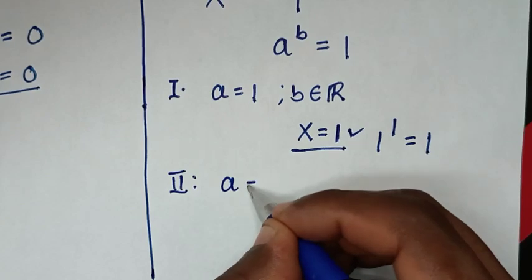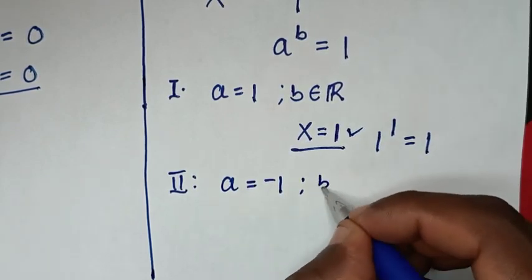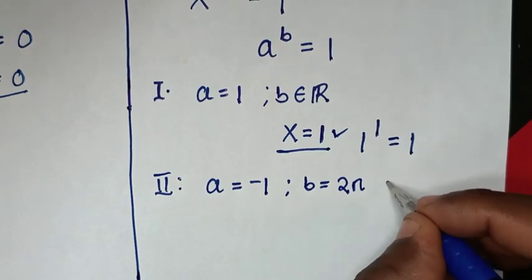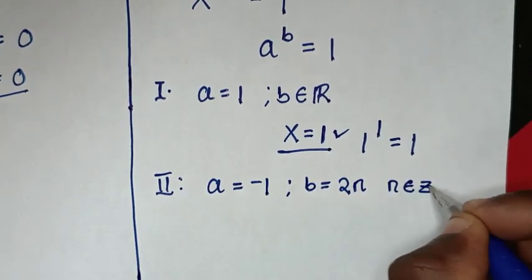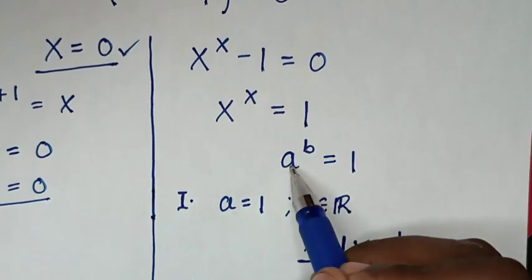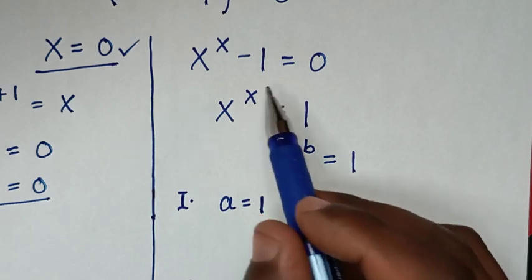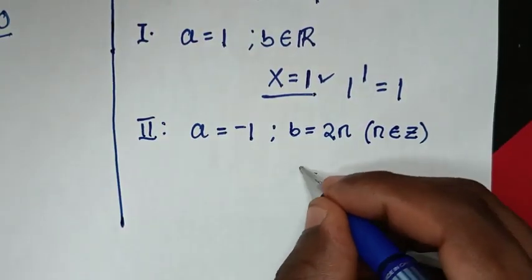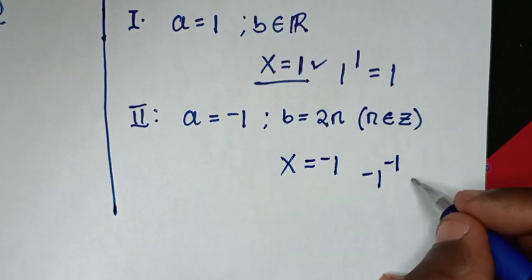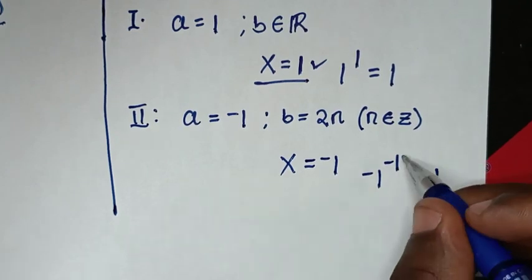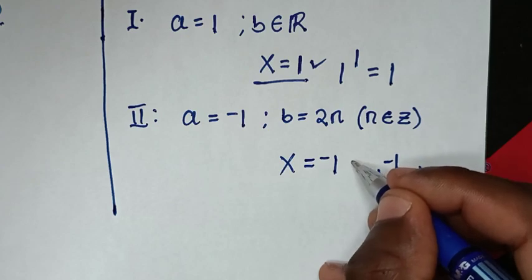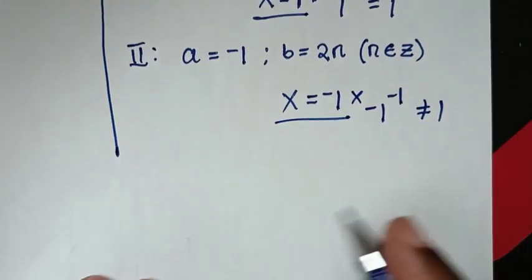For the second case, if a is equal to negative 1, then b should be an even number of the form 2n where n is an integer. If x is negative 1, then x power of x becomes negative 1 power of negative 1, and negative 1 power of negative 1 is not equal to 1 because it equals negative 1. So this condition for x equals negative 1 is not possible.